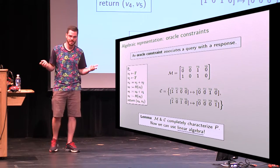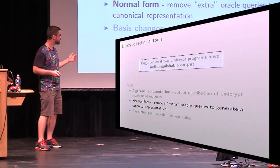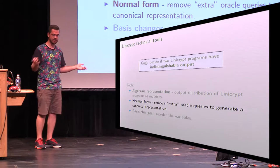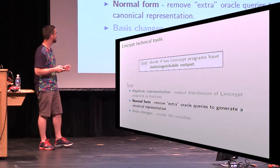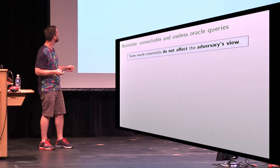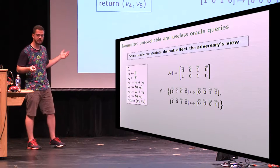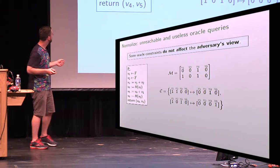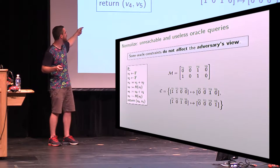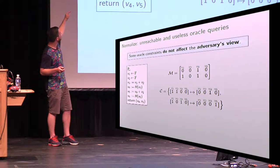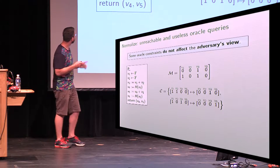Now we can use linear algebra. Next, I'll show how to trim down this representation to get to a canonical form. First note that some of these oracle queries don't affect the adversary's view — V6 isn't included in any way in the output.